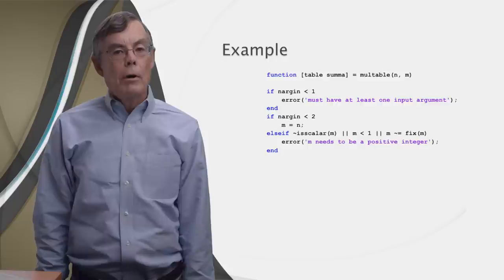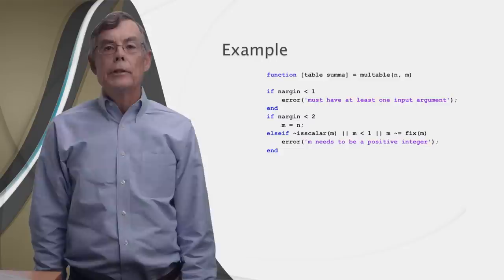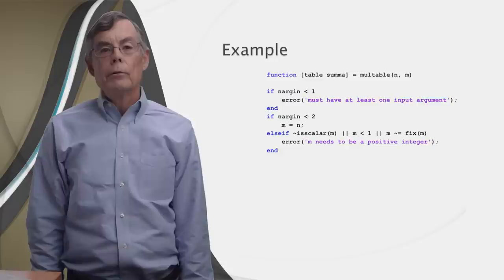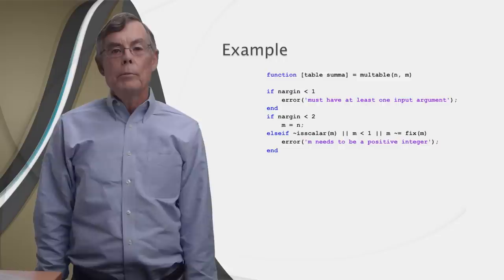The first condition uses the built-in isscalar function to check whether m is a scalar. It returns true if its argument is scalar and false otherwise. So we need to use the logical negation to turn that around. By putting the tilde in front of isscalar, because not scalar is the error case. Then we check for the error m less than one.